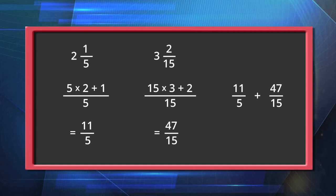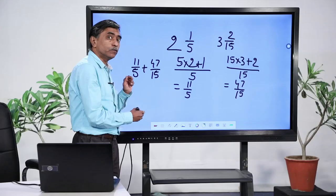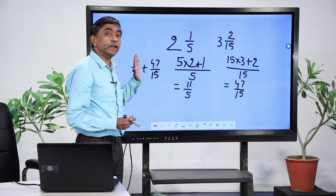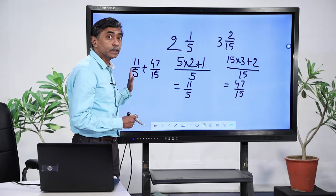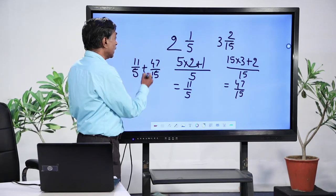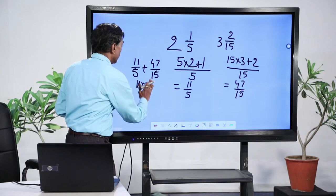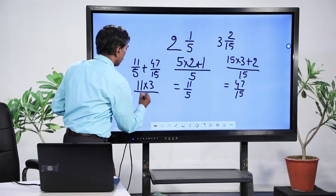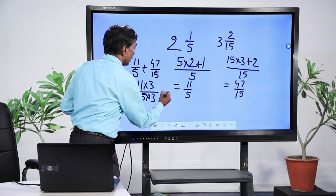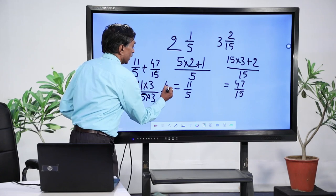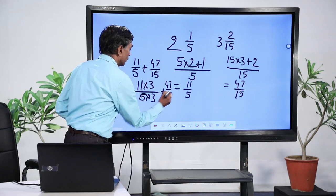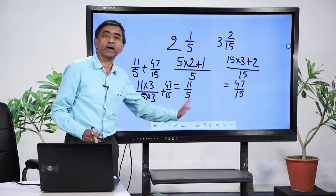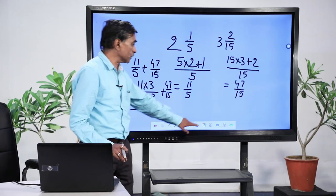The LCM of the denominators is 15. I convert both into the form with denominator 15. For the first rational number 11/5, I multiply numerator and denominator by 3, getting 33/15. The second is already 47/15. So I get 33 + 47 divided by 15, which is the regular process you follow.